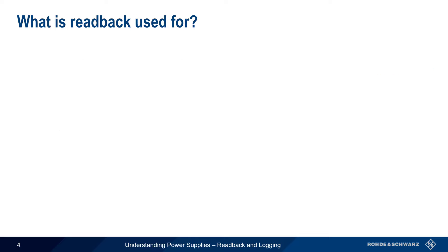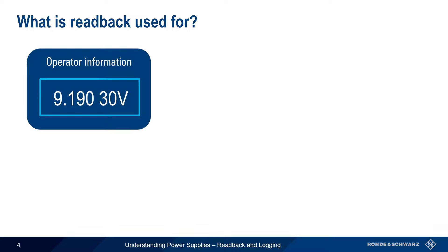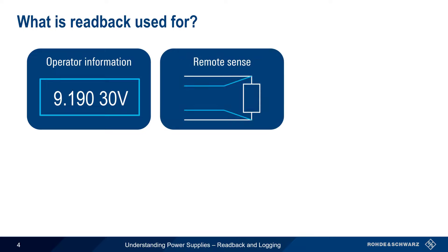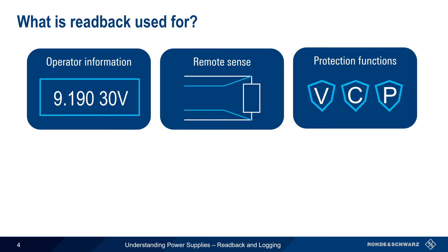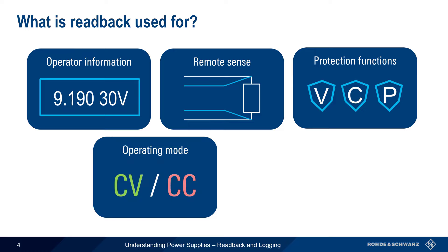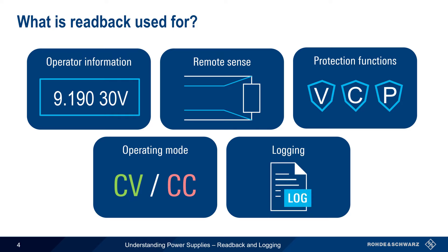There are five main areas in which readback is used. The first is simple operator information — showing the user the values of voltage, current, and power being produced by the supply. Another area is remote sense, which is used to compensate for voltage drop between the power supply output terminals and the load. Protection functions use readback to avoid situations in which the voltage, current, and/or power exceed user-defined or hardware-defined safe limits. Readback is also vital in determining if a power supply is operating in so-called constant voltage or constant current mode. Finally, readback is used for logging the measured supply output values.